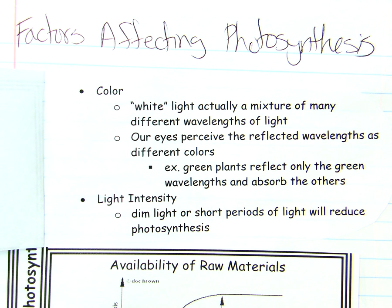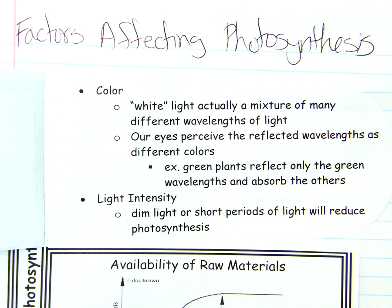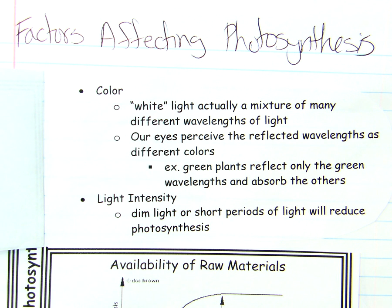The other factor with sunlight is light intensity — how bright the light is, or how much is available. So if it's really dim, if we put a plant in a shadow or far away from a window, it's not going to do as well. If we only give a plant a little bit of light every day, that's going to reduce the amount of photosynthesis done.